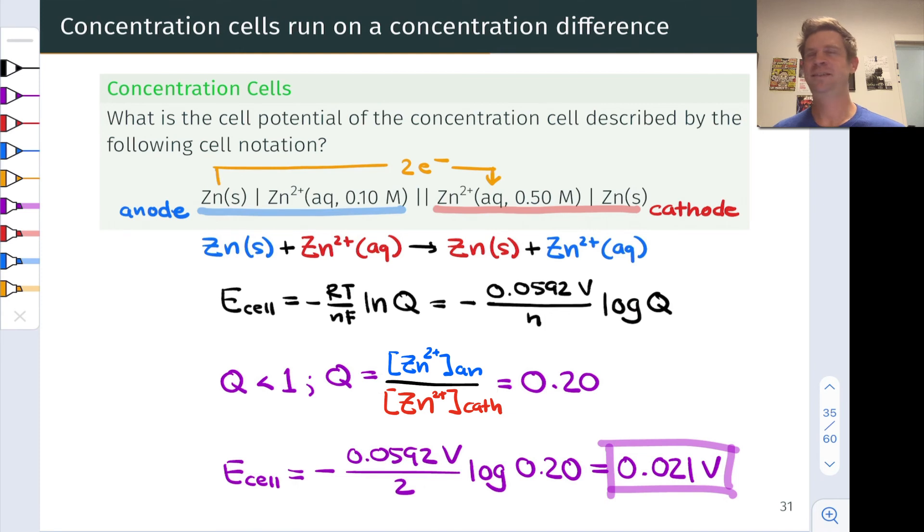To calibrate you on this, that's about a sixth, a seventh, maybe about an eighth of a AAA battery. So not great. Not a ton of cell potential you can get out of a concentration cell.